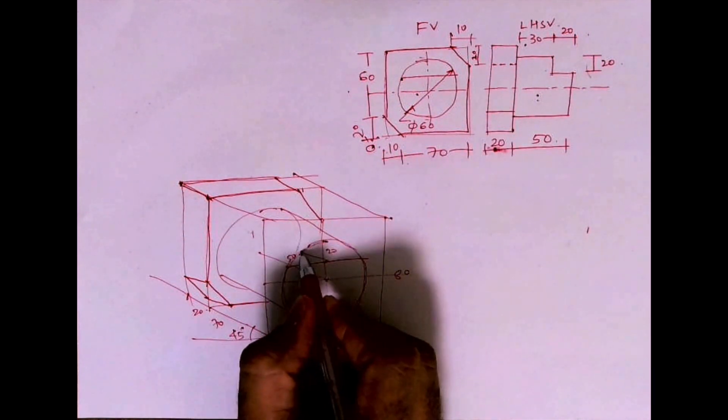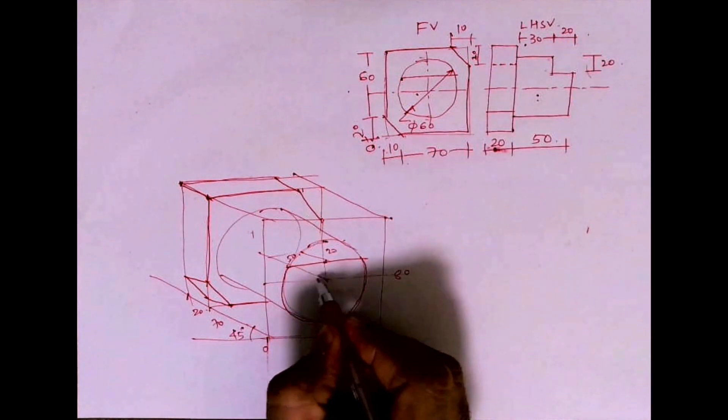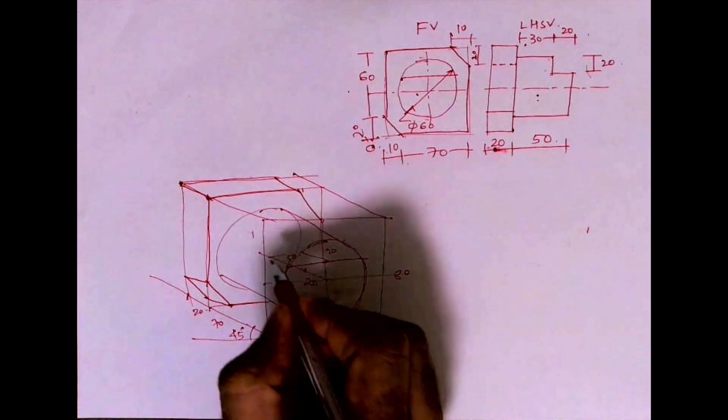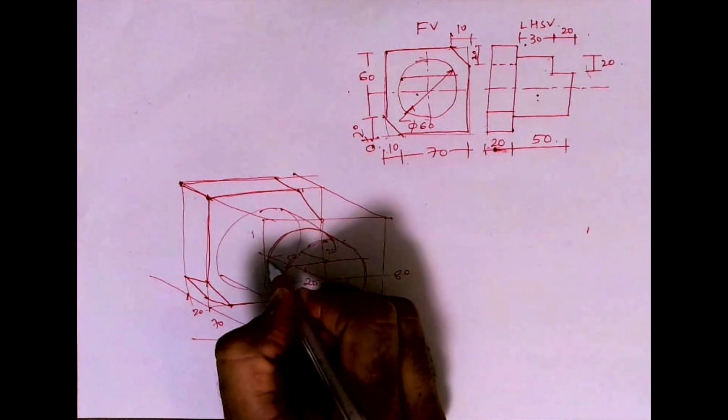From here you go inside by 20 and then we need to draw line. So from here I'll go inside by 20 and I will draw circle. This is how it will come.